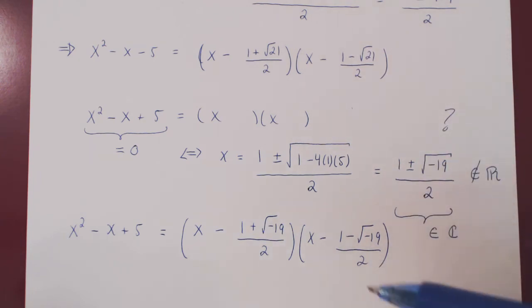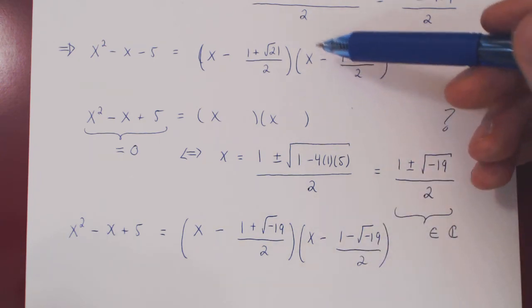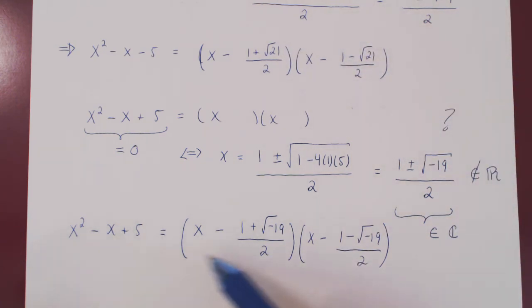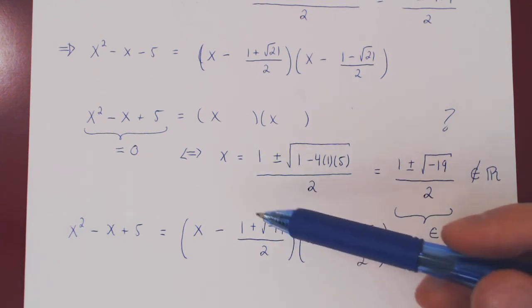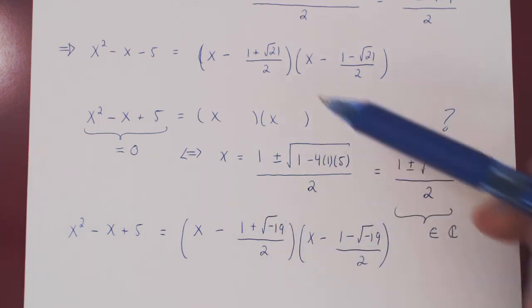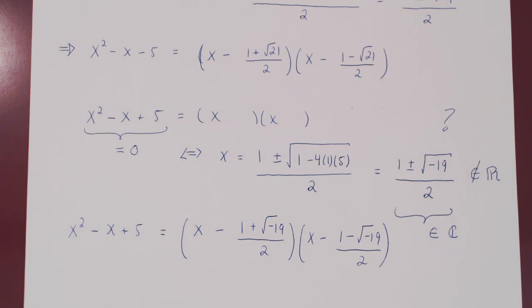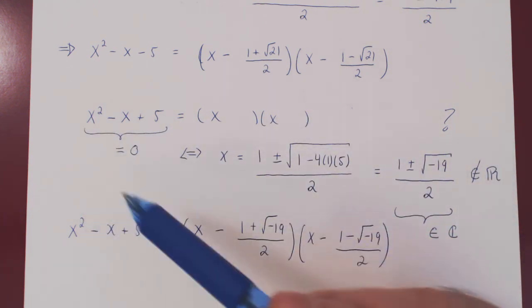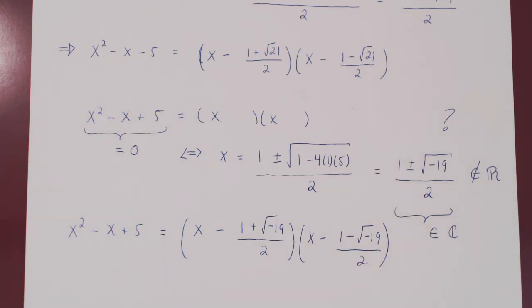So, everything works the same. The only difference in the first factorization, the two zeros were real numbers, and the second factorization, the two zeros are now complex numbers. They're not real numbers. One thing worth mentioning in this course, in differential calculus, we will not play with complex numbers. We'll always stay within the realm of real numbers. So, if you ever have complex roots, we'll simply say that it cannot be factored, of course, over the real numbers. And we'll just ignore the complex factorization. And that's it.